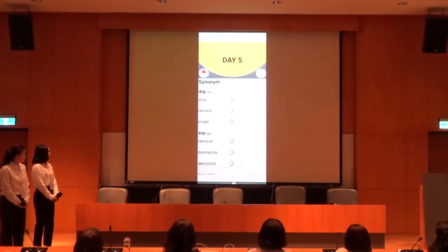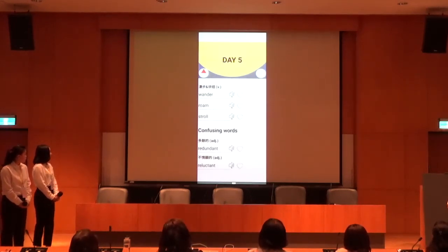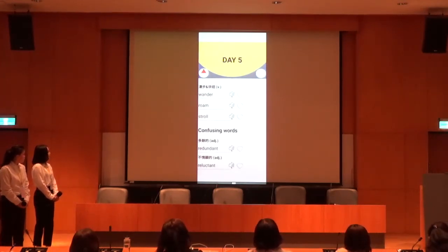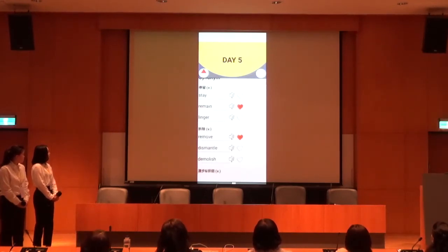In the day interface, there are two types of TOEIC vocabulary: synonyms and confusing words. We consider that many words are similar to other vocabulary, so we choose vocabulary that users cannot recall immediately. In addition, we design a love-shape button next to the vocabulary. When you click it, the outline heart will become a red heart. We also design a sound button so users can play it when they need. The audio is recorded by ourselves.